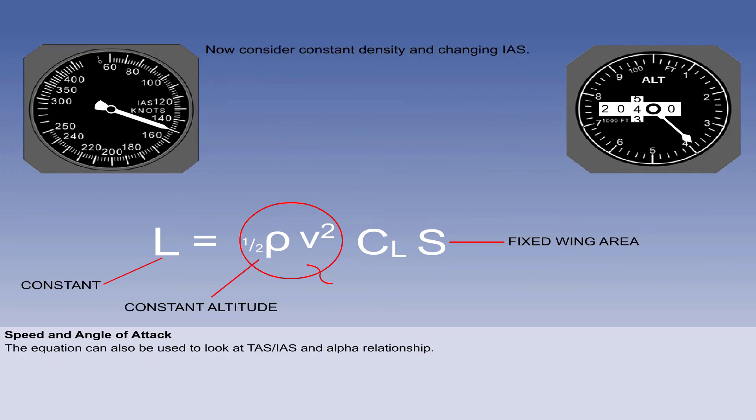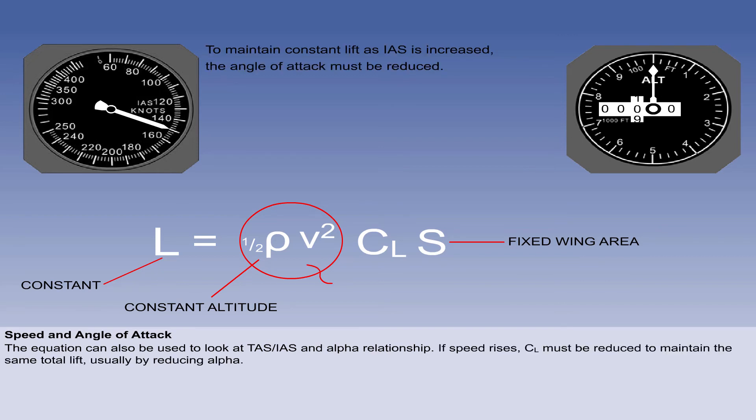The lift formula can also be used to look at the relationship between speed and angle of attack at a constant altitude. As before, if one element of the equation is increased, another must be reduced. As speed rises, the CL must be reduced to maintain the same total lift, normally by reducing the angle of attack.